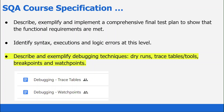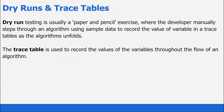In the description to this video you'll find these two worksheets that we are going to work through. Let's start by talking about dry runs and trace tables. Dry run testing is usually a paper and pencil exercise where the developer takes on the role of the computer and manually steps through an algorithm using sample data, recording the value of the variables in a trace table as they progress. The trace table is used as a way of demonstrating what has been stored in the program.